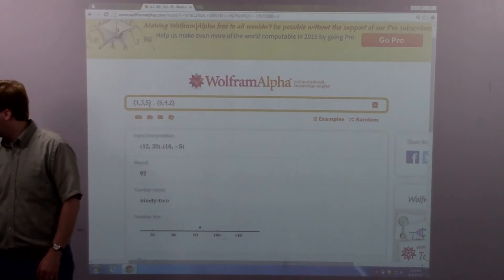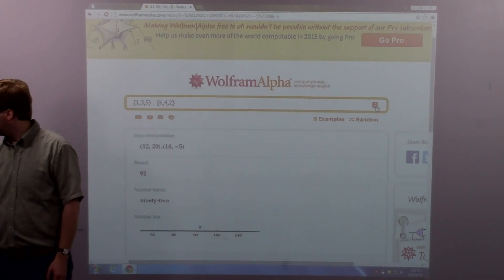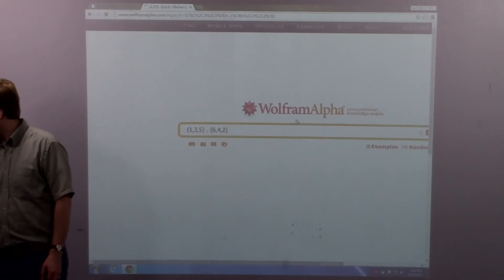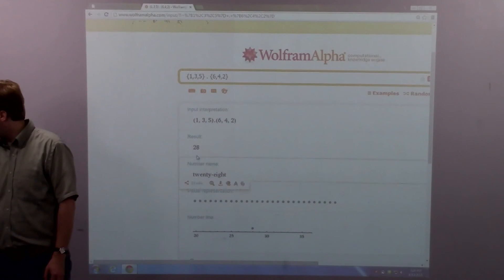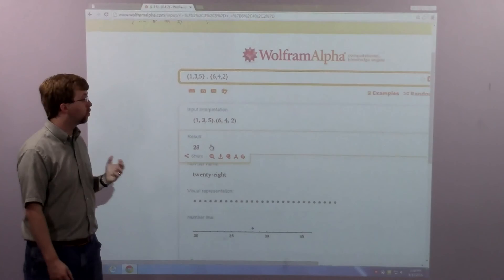And I leave everything else alone. The period is actually the dot operation. If I hit equals, we'll go ahead and calculate it. And the result is shown right here. So the resulting dot product is 28.